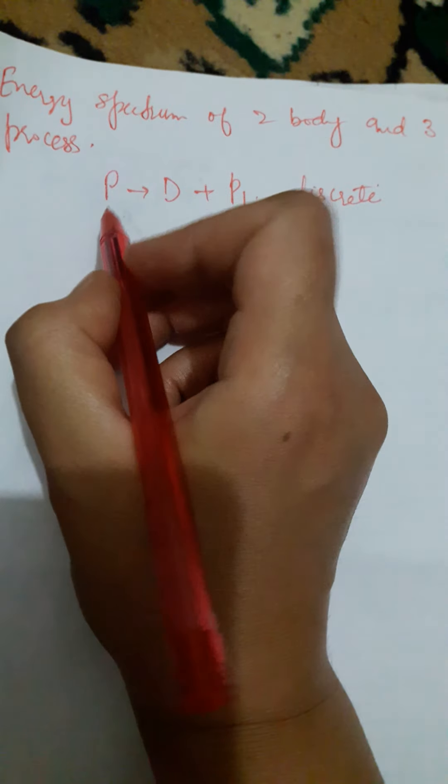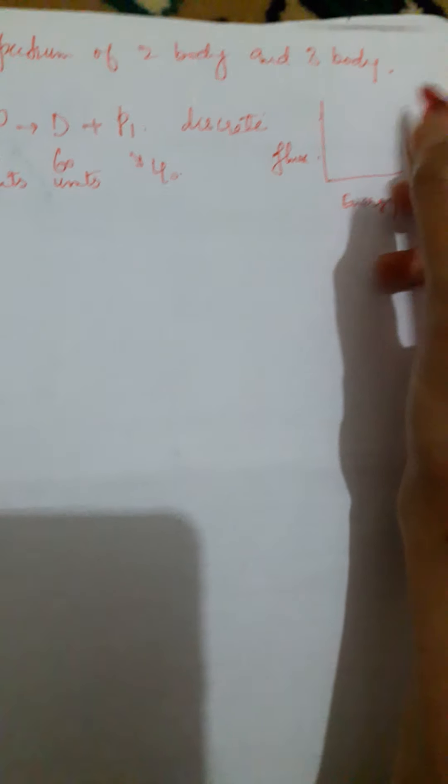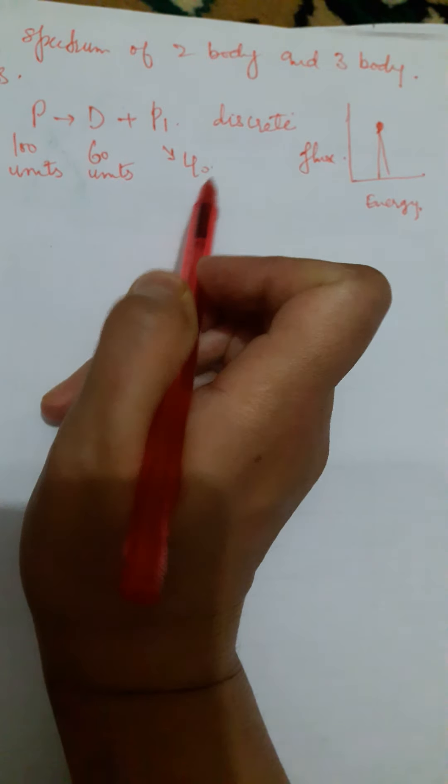For example, if you have a process in which a parent nucleus decays and gives a daughter nucleus and emits one more particle, say P1, the energy spectrum of this process will be discrete in nature. If the parent particle had 100 units of energy and the daughter nucleus has 60 units, then 100 minus 60 gives 40 units taken by the outgoing particle. So if we plot a graph of flux versus energy — flux means the number of particles available in a given process — we will see that we attain a discrete peak at a value of 40. The flux is maximum corresponding to this value of energy, so we have an idea that it has taken 40 units of energy, once we subtract 60 from 100.